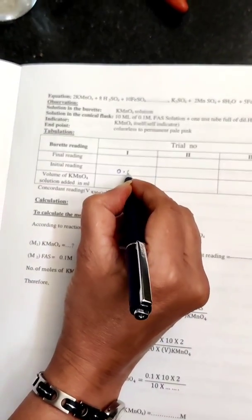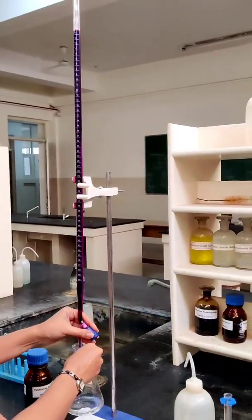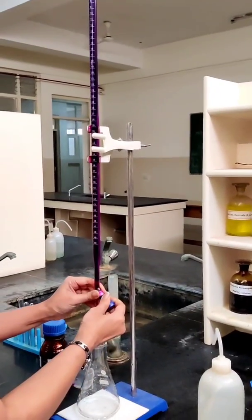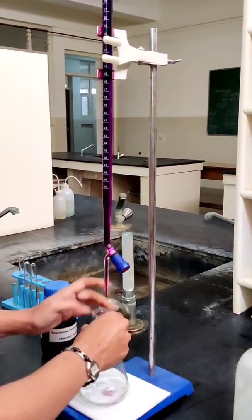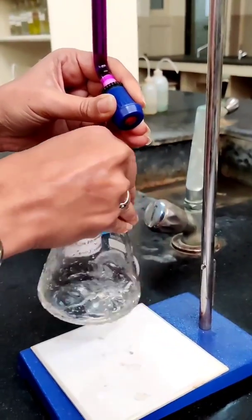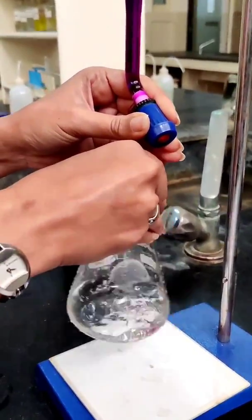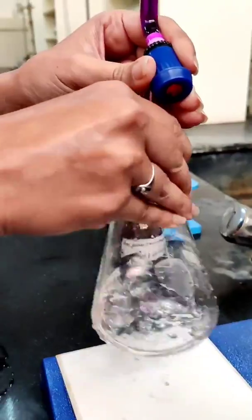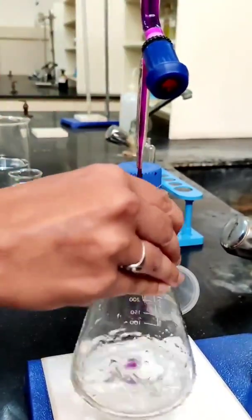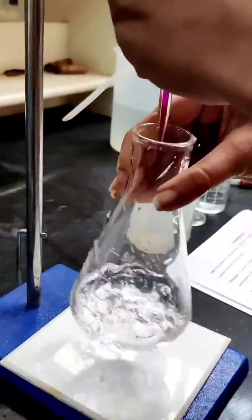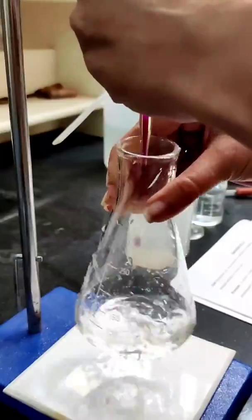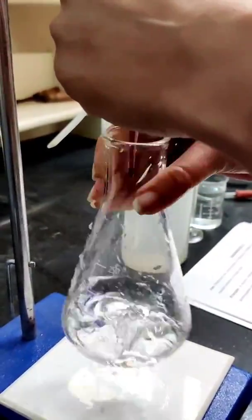Note down the initial reading in the tabular column. The solution is titrated against KMnO4 solution taken in the burette until the solution turns permanent pale pink color. Add dropwise until a permanent pale pink color is formed.